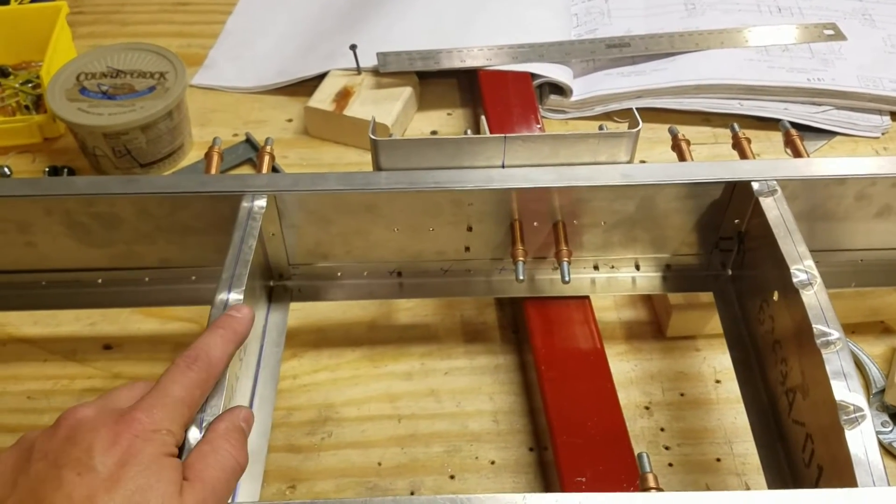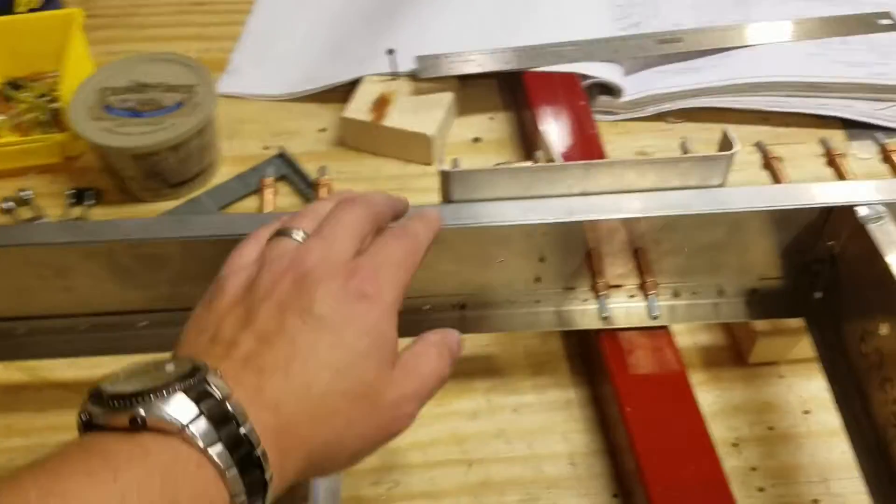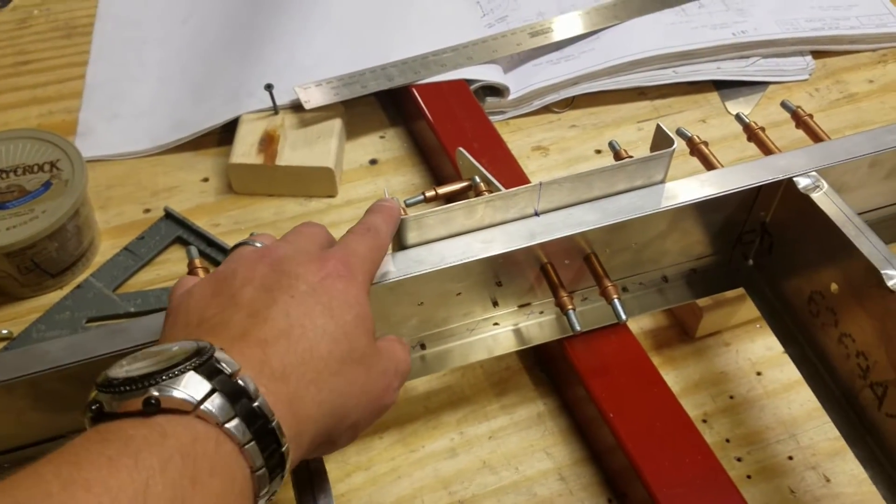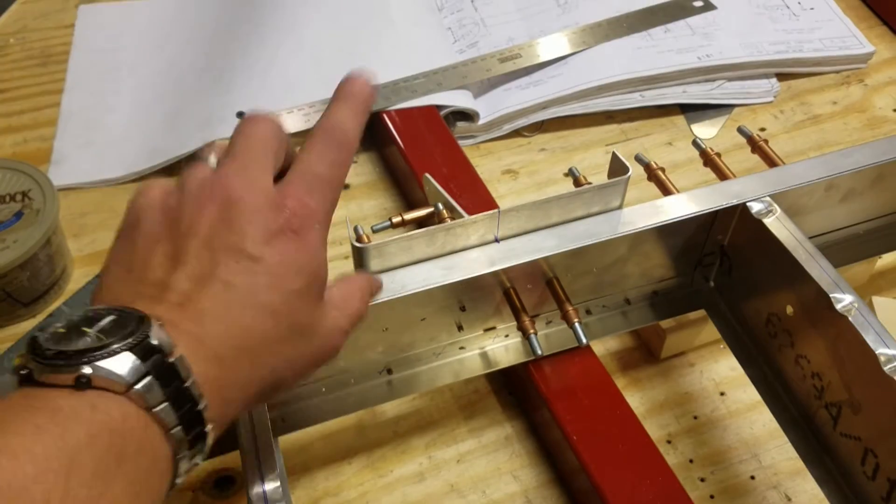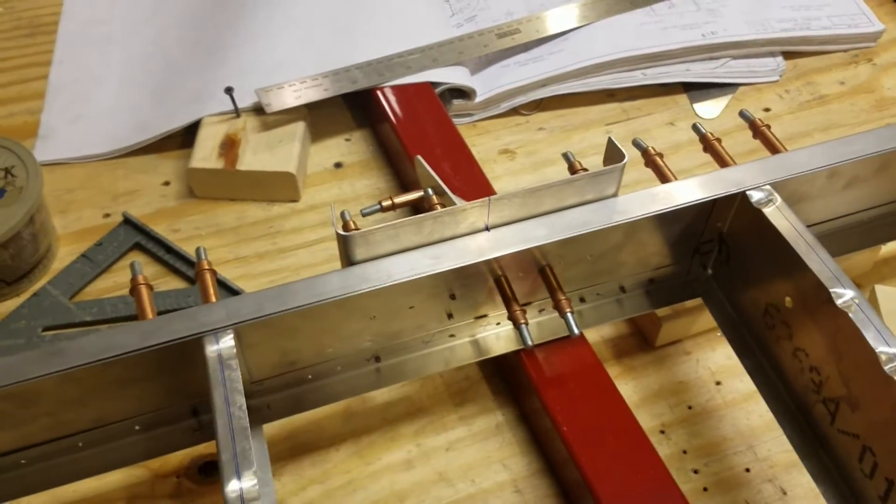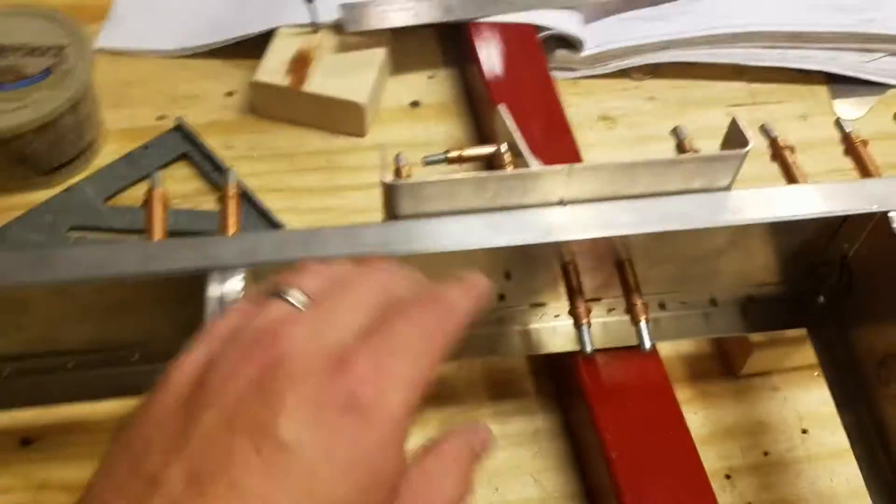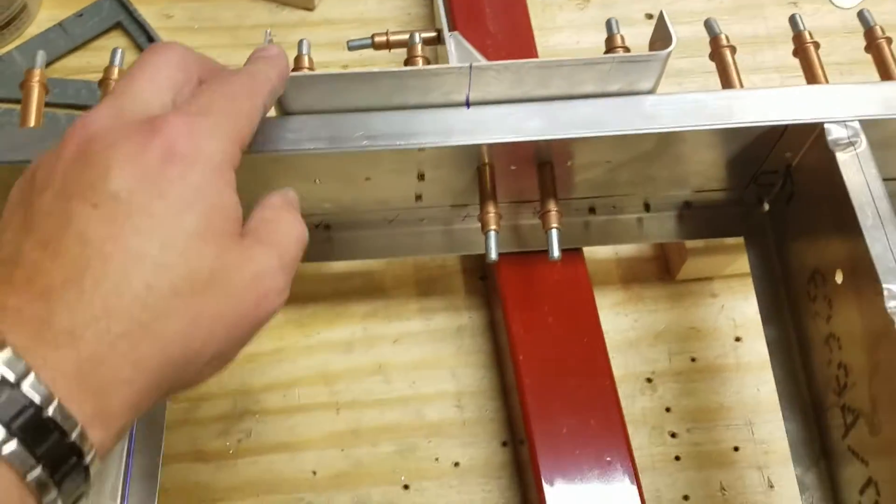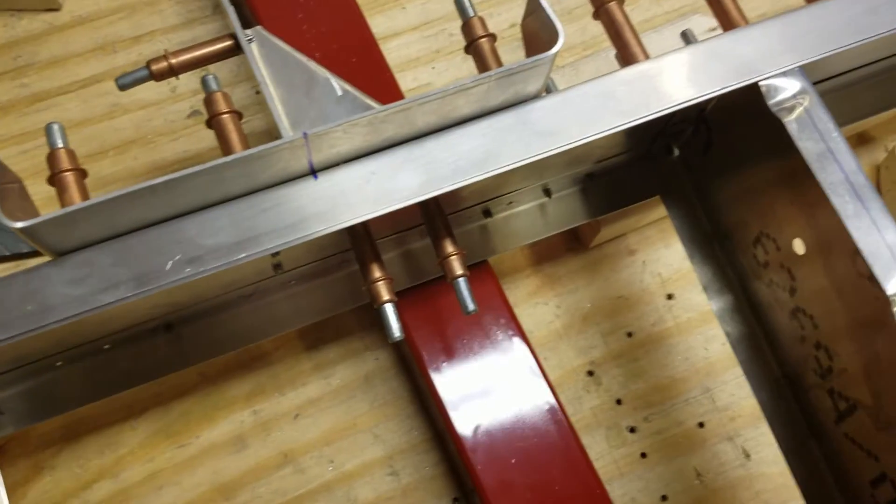The only way for me to compensate for that is to add another four millimeters of material to this length or height if you will, so that I get the proper protrusion from the bottom to anchor to the fuselage.